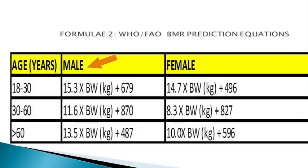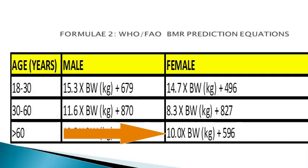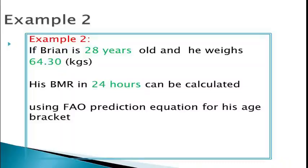For male clients aged above 60 years, their basal metabolic rate is given by 13.5 multiplied by body weight in kilograms, the product of which is added to 487 kilocalories. For their female counterparts aged above 60 years, their basal metabolic rate is given as 10.5 multiplied by body weight in kilograms, the product of which is added to 596 kilocalories.